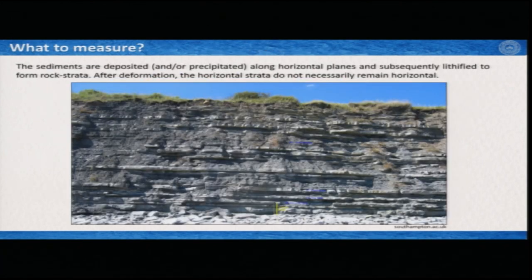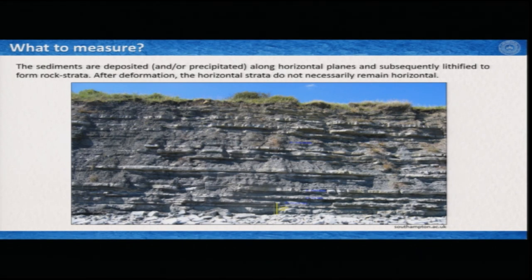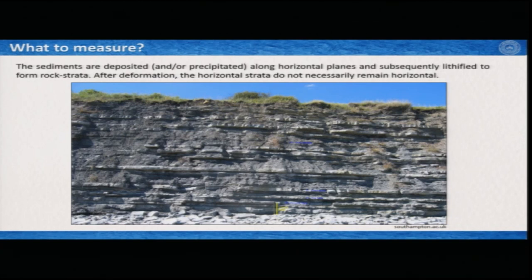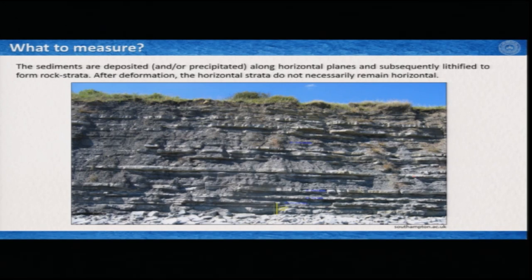We now move to what to measure in the field. When sedimentary layers get deposited, they generally deposit in a horizontal manner — all layers are initially horizontal, they get lithified, and also stay horizontal. But if you have visited any deformed terrain, you must have seen that these things do not remain horizontal. If they do not remain horizontal, there must be some sort of deformation at large or small scale. In this image we see that these layers are essentially horizontal — if they are horizontal there is no problem and these rocks are probably not deformed.